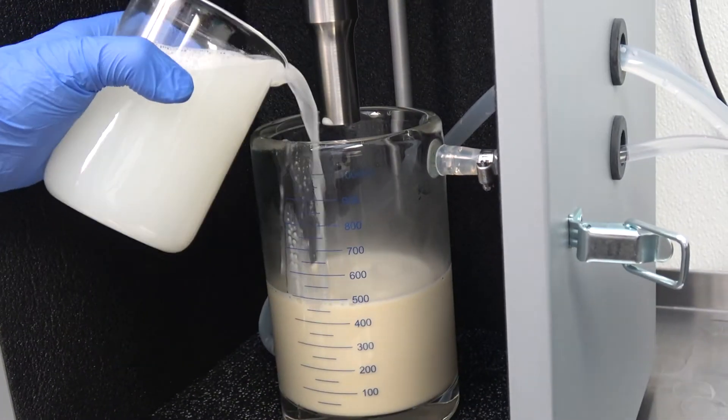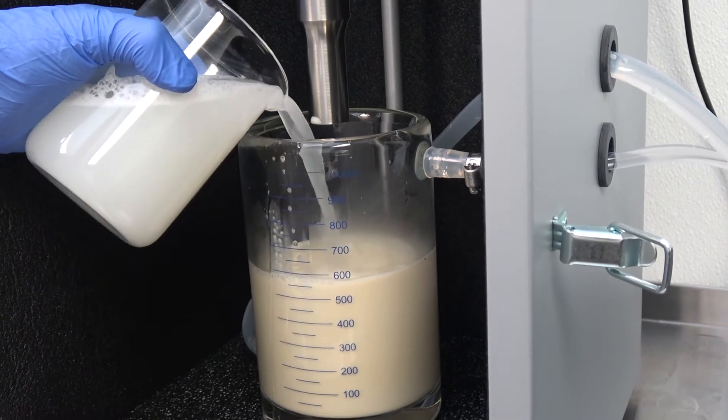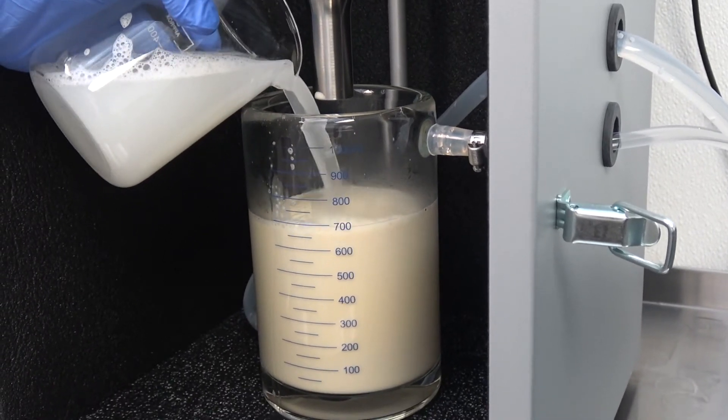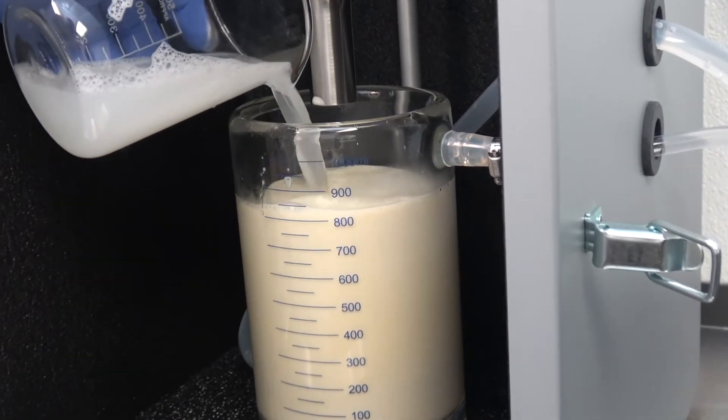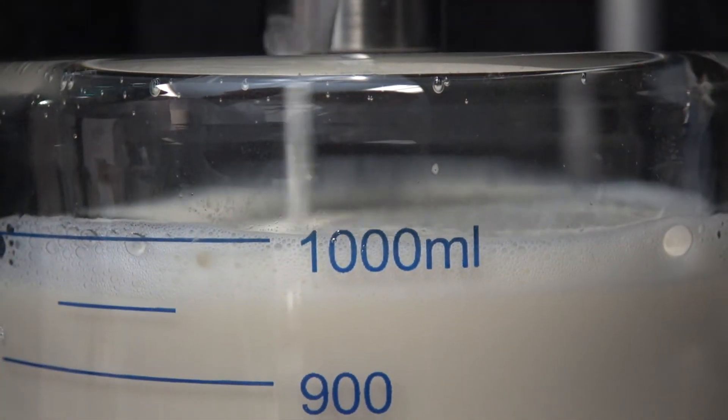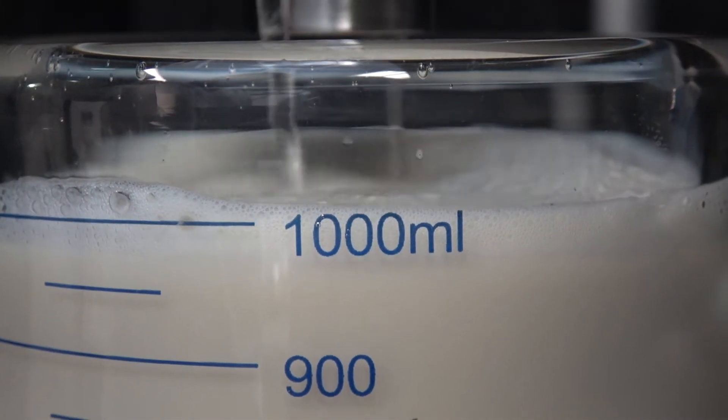Use a second volume of water to transfer the remaining residual material from the original beaker to the jacketed beaker. In this case, we've used 500 ml of water. We'll add additional water to top up to the 1 liter mark.